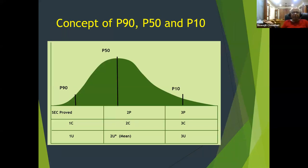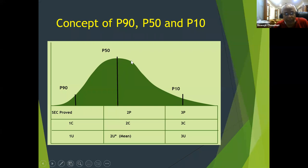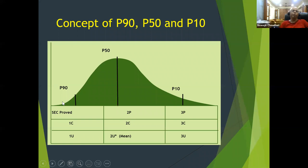This distribution diagram illustrates the concept. P50 means the area under the curve on the right-hand side equals the area on the left-hand side. P10 means only 10% of the area is to the right. P90 means I will easily produce this volume — the chance of producing less than P90 is very, very small.